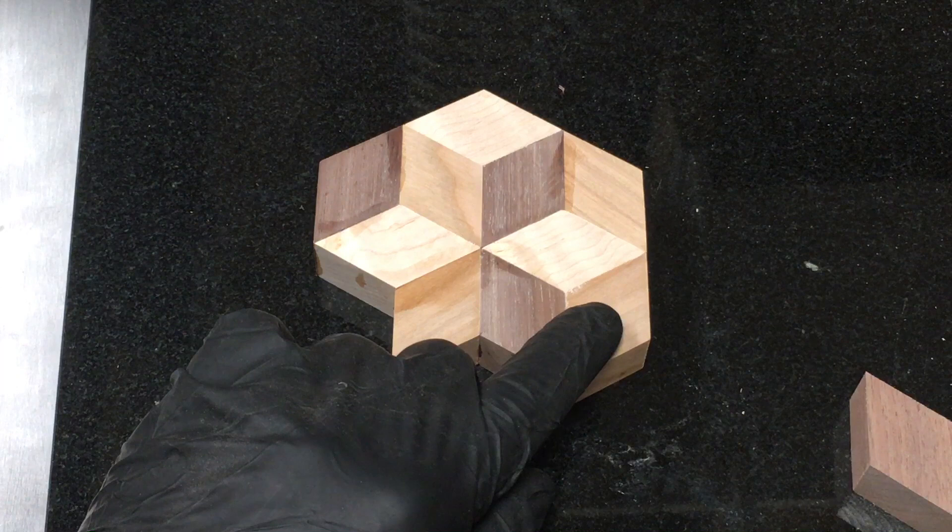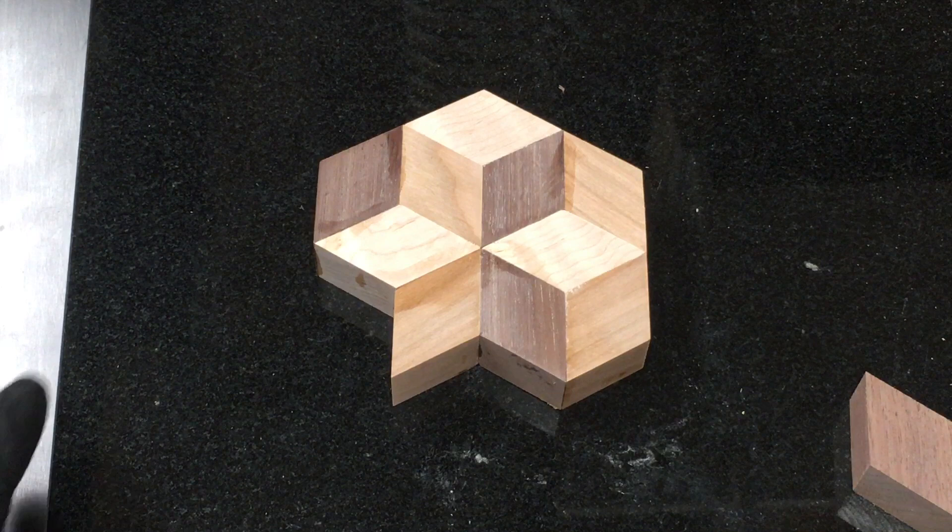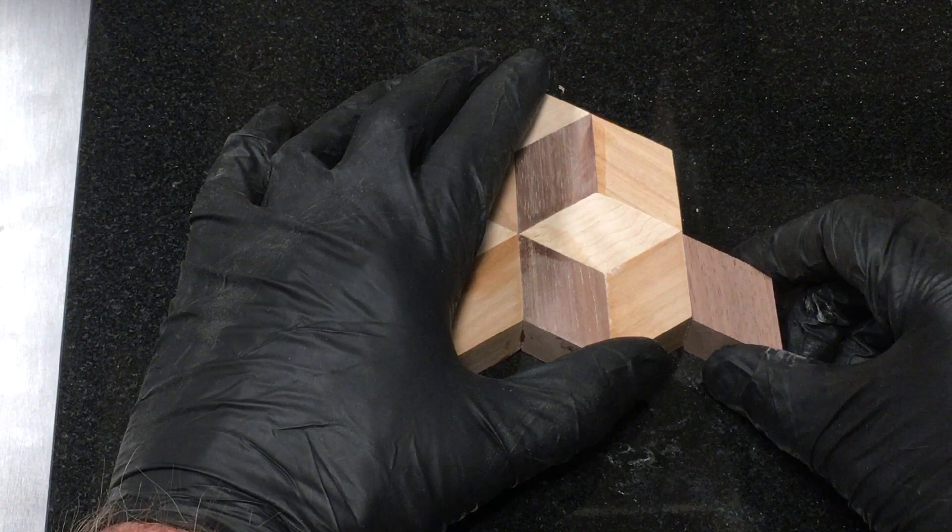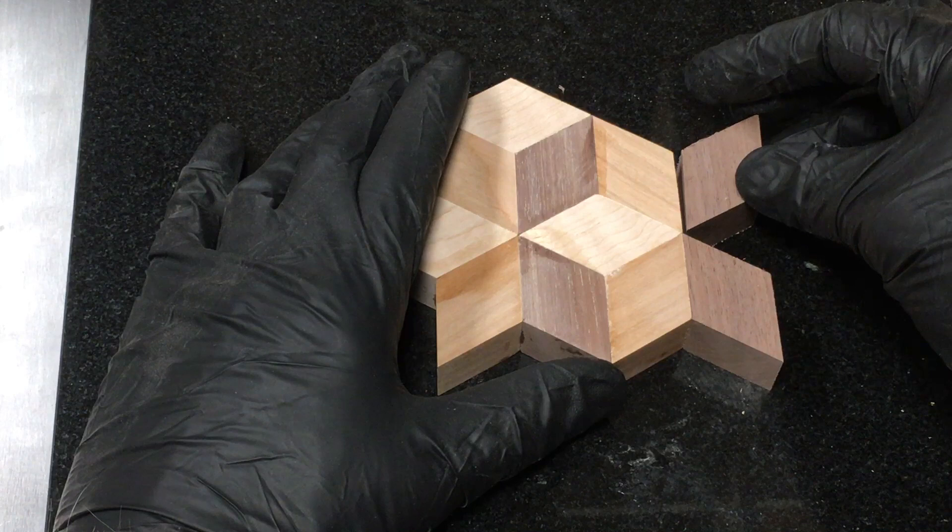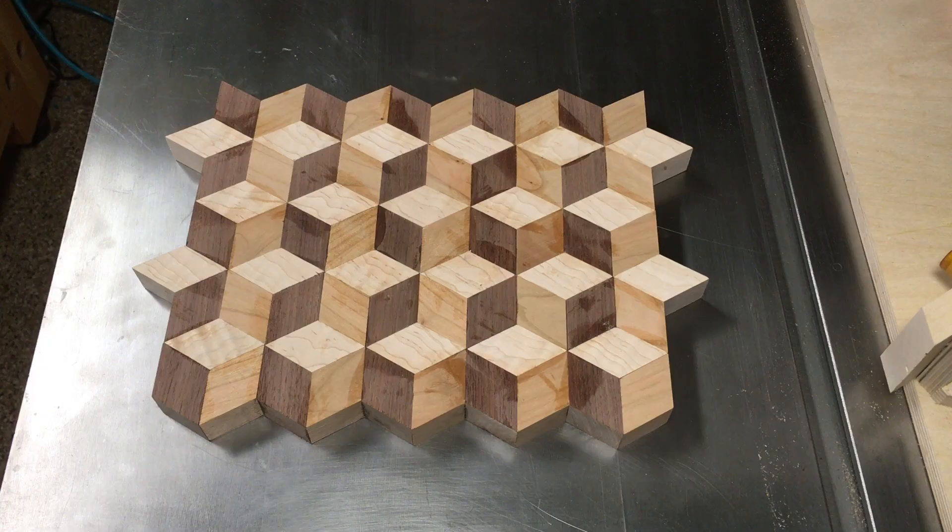But what if the problem had been in the other direction? What if this piece had been a little bit too small? Well, you could move the stop block and cut a larger piece in the jig, but the easiest thing to do would have been to go ahead and put this piece in, and the next one. And then when we went to put this piece in, it would have been too large, and we could have trimmed it.